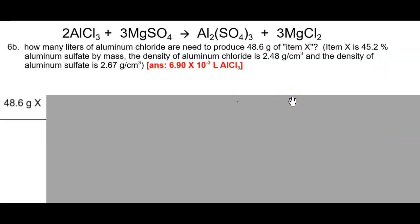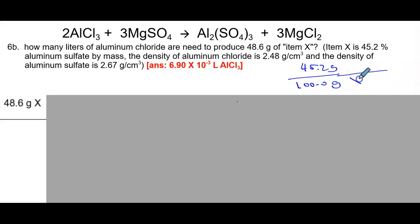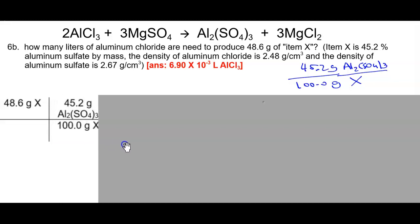Item X is 45.2% aluminum sulfate by mass. We think about what our part over whole is: 45.2 grams over 100 grams. Our whole is X, and the part is aluminum sulfate — so 45.2 grams of aluminum sulfate per 100 grams of X. That's the relationship we can use to calculate X away.